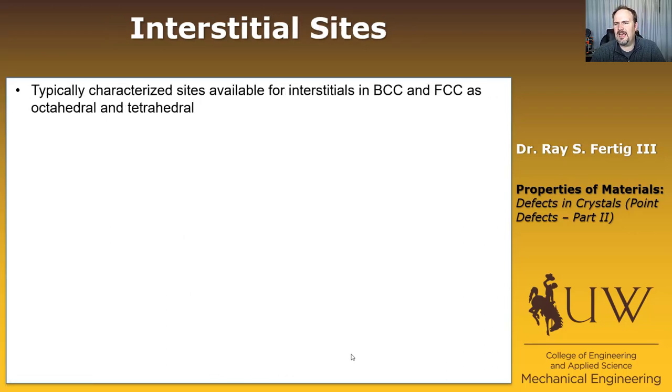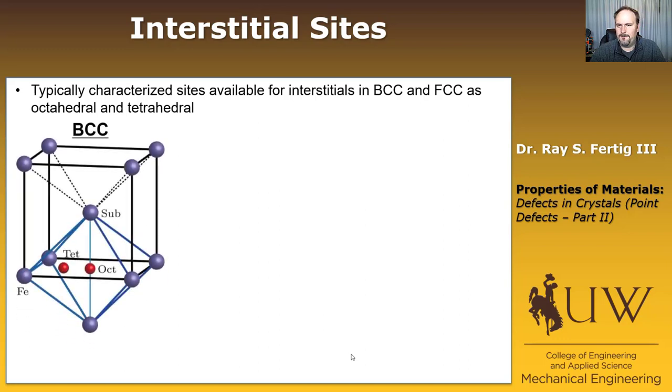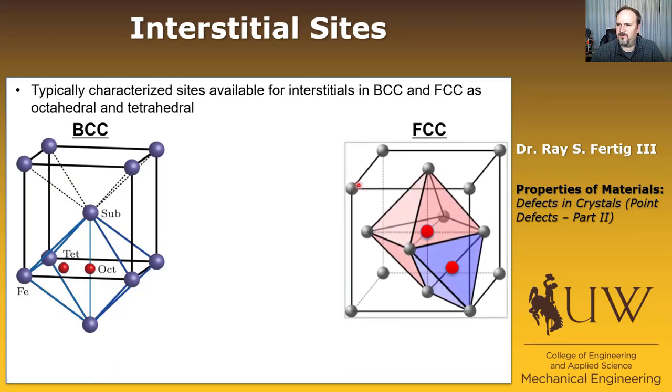So where do they reside? Well, usually, at least in the case of BCC and FCC, we characterize the sites that are available for the interstitial atoms to reside as either octahedral or tetrahedral. What I'm showing you here is a BCC structure. Here's your corner atoms on the cube, right there, with the center atom, and then this is a center atom in a subsequent cell below it. And in the FCC case, here's your four corner atoms on the top and your four corner atoms on the bottom, and then you have your atoms on the faces, right?